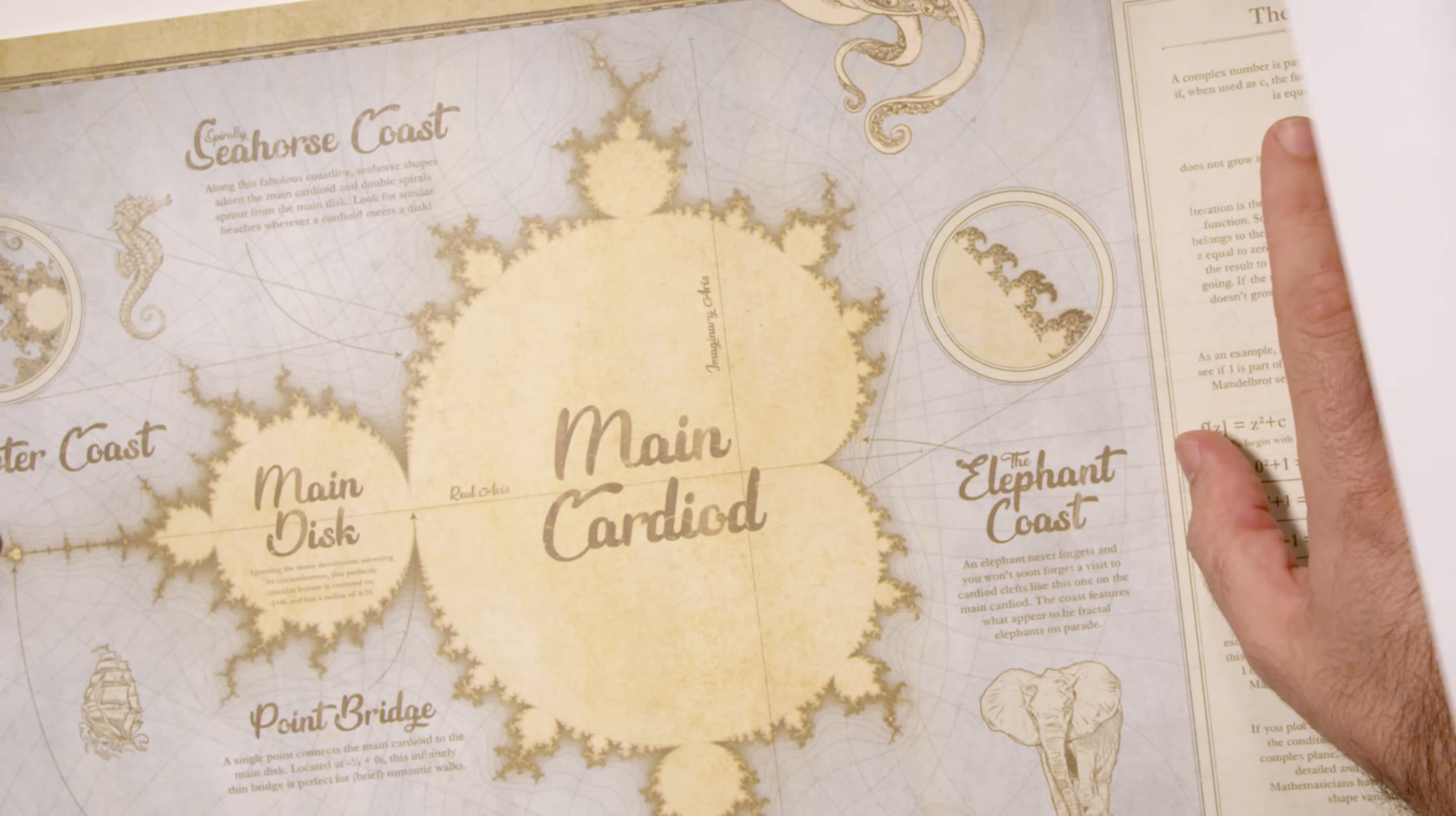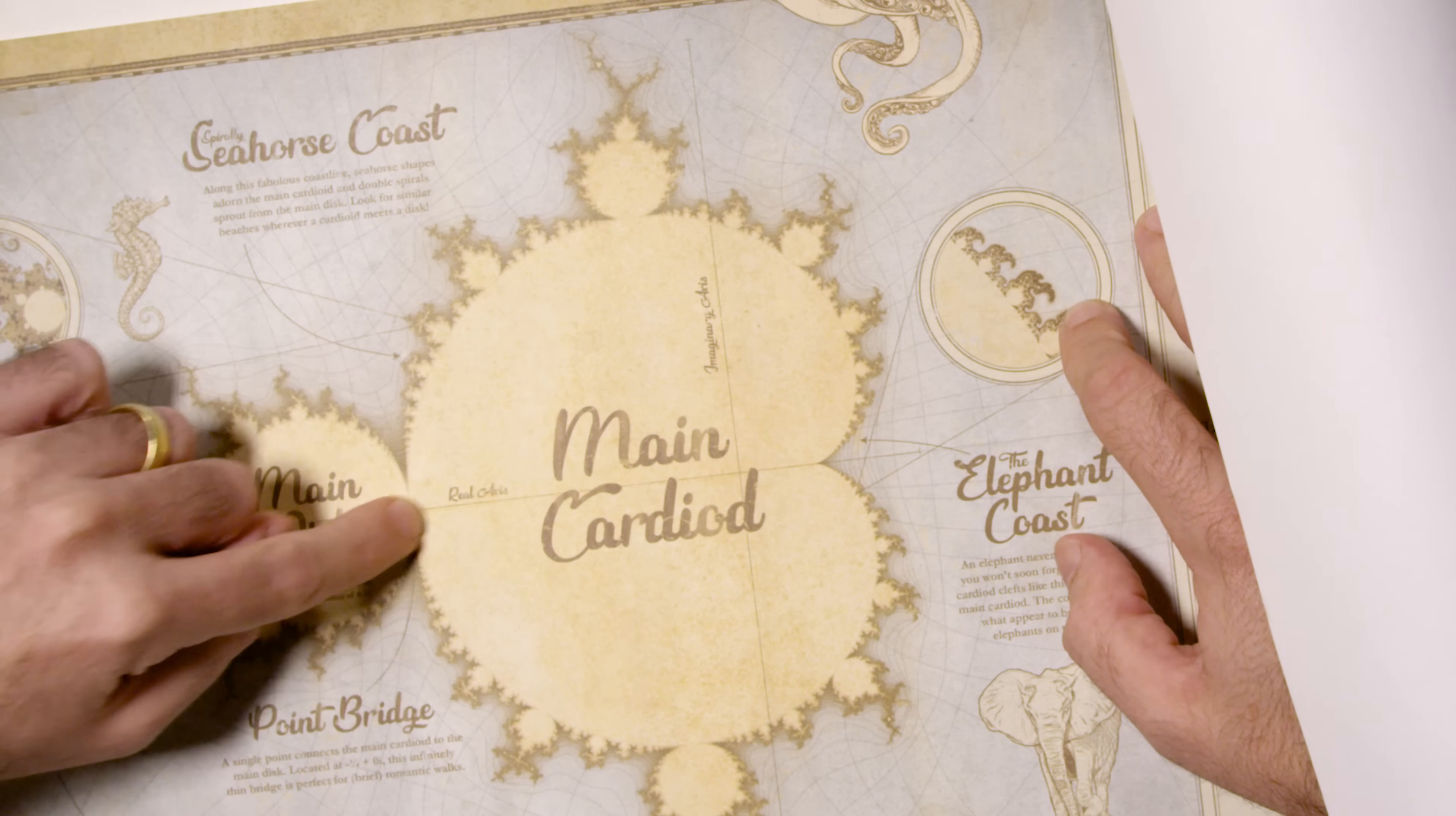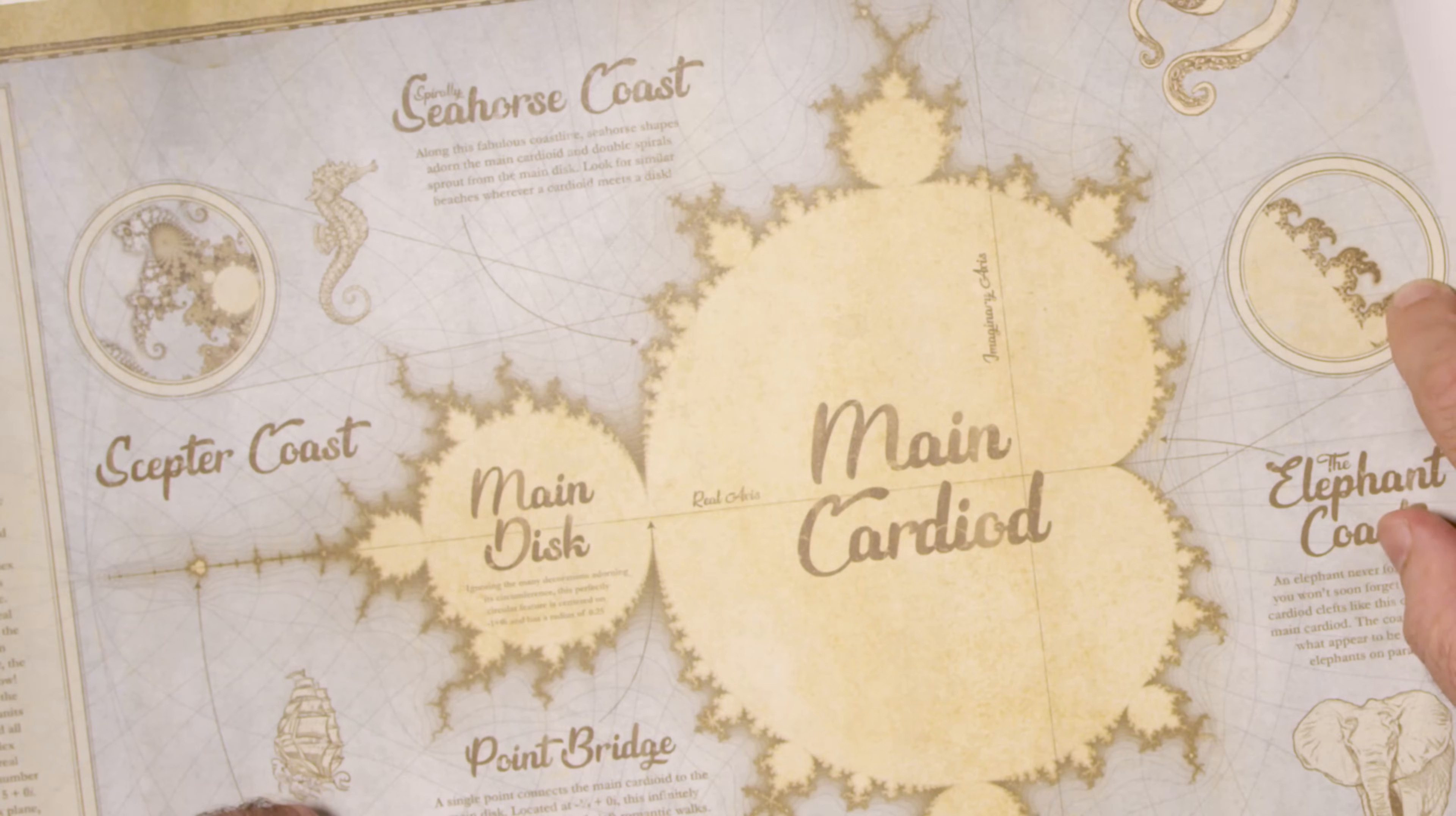Let me point out a couple of the features I love here. Right here, there's a point at the real component is negative three quarters and the imaginary component is zero. This is a single point. It is the only point that belongs to the set that is along this line that intersects the real axis right at negative three quarters. That I call a point bridge. It is an infinitely thin bridge, perfect for brief romantic walks because it's just a single point.